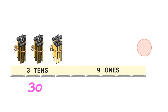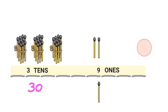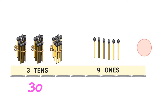Here I have 3 tens which is 30. And I have 9 ones. Let me draw 9 ones: 1, 2, 3, 4, 5, 6, 7, 8, 9. I have 9 ones. So I have 30 plus 9 — 39 matchsticks.